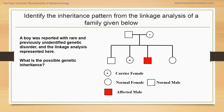Before we dive into the details of the inheritance pattern, I would like to give you an example of a problem. A boy was reported with a rare and previously unidentified genetic disorder, and the linkage analysis is shown here, where mom and dad are unaffected and normal. But mom with this dot means she is affected — so she was a carrier. This boy is affected along with his siblings. One sister is an affected carrier. The other two siblings, a brother and sister, are normal. So what is the possible genetic inheritance for this linkage?